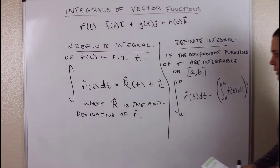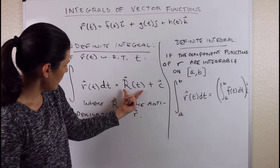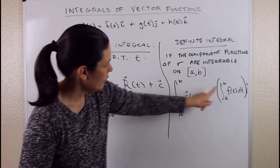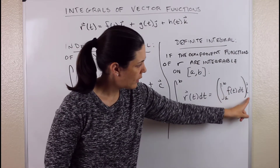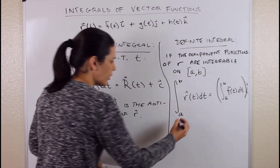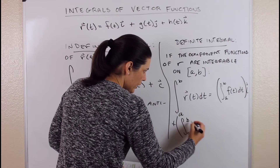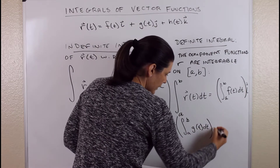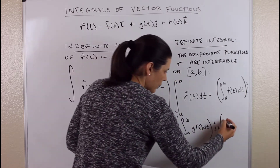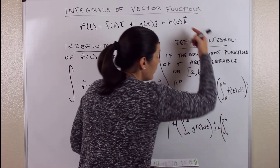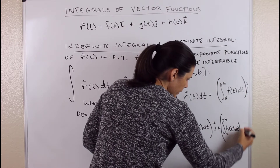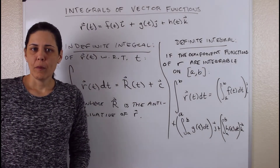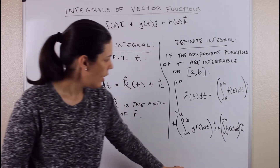This still produces a vector. That scalar value times I gives the I component. Then plus the integral from A to B of G of T dt for the J component, and plus the integral from A to B of H of T dt for the K component. So integrating a definite integral of a vector function is very similar to what you know about integrals of scalar-valued functions.